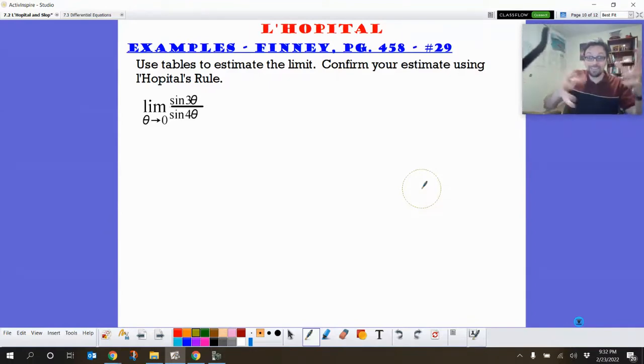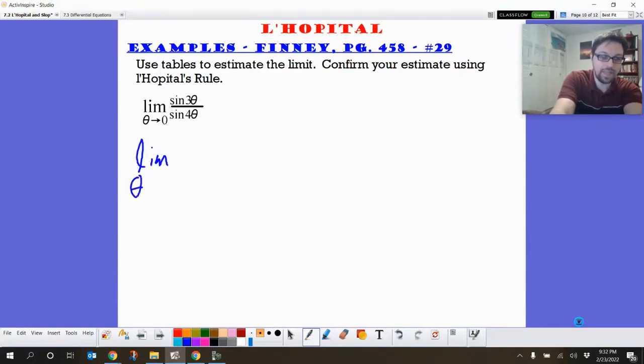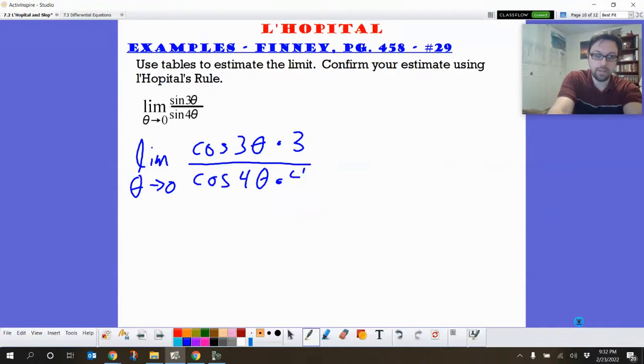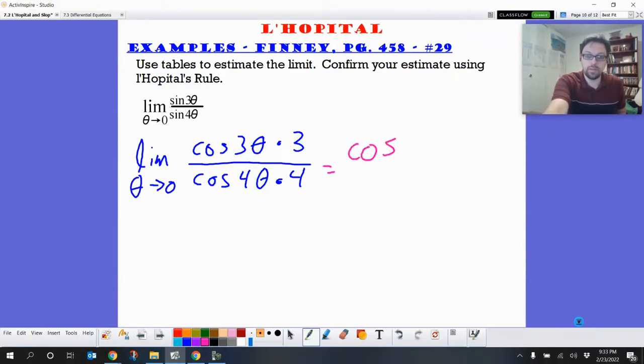To do L'Hopital, you dodge your cat and you find the derivative of the top and the derivative of the bottom. So that's the limit as theta approaches 0. The derivative of sine is cosine. So cosine of 3 theta multiplied by the derivative of our inside. We've got to chain rule that, which is 3. And then derivative of the bottom is going to be the cosine of 4 theta multiplied by 4.